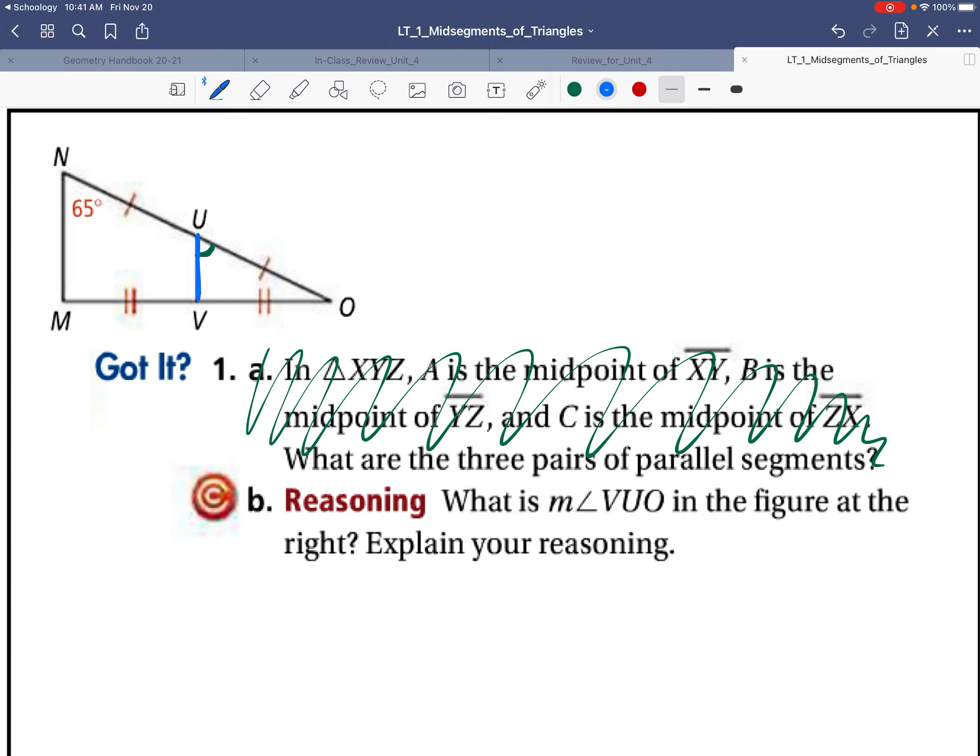We know that UV is a mid-segment. How do we know? It connects two midpoints. So because it's a mid-segment, it's parallel to NM. Therefore, the measure of angle VUO will be equal to the measure of angle MNO.